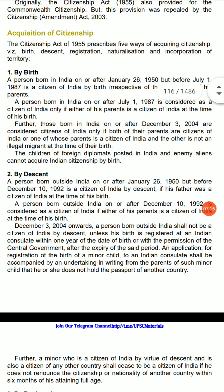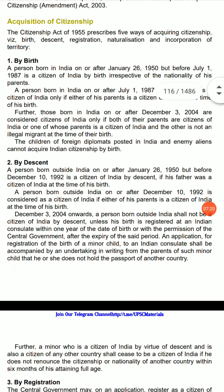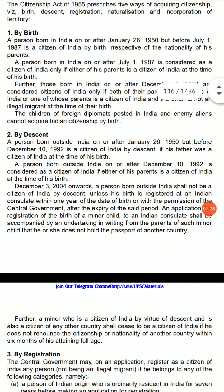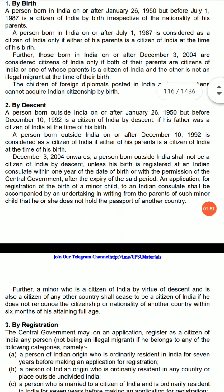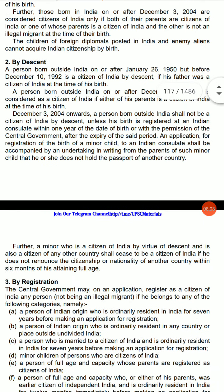First, by birth: a person born in India on or after January 26, 1950, but before July 1, 1987, is a citizen of India by birth irrespective of the nationality of his parents. A person born in India on or after July 1, 1987, is considered a citizen of India only if either of his parents is a citizen of India at the time of his birth. Further, those born in India on or after December 3, 2004, are considered citizens of India only if both of their parents are citizens of India, or one of whose parents is a citizen of India and the other is not an illegal migrant at the time of their birth. Children of foreign diplomats posted in India and enemy aliens cannot acquire Indian citizenship by birth.